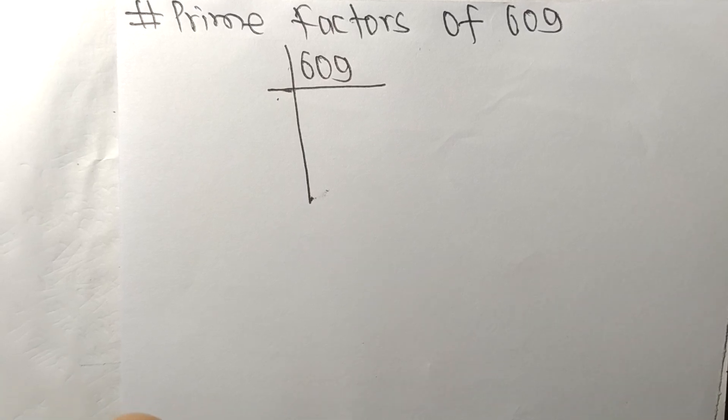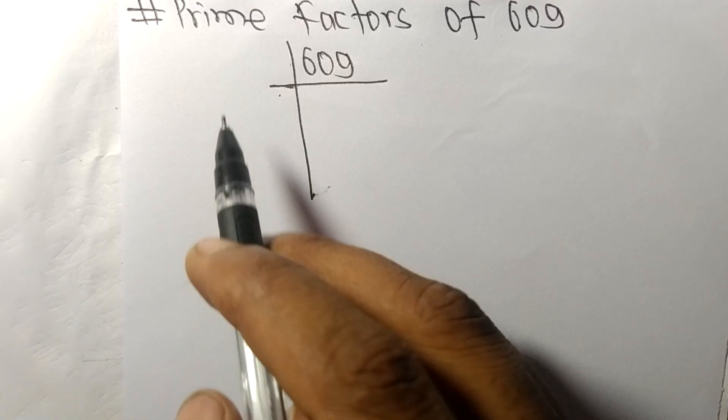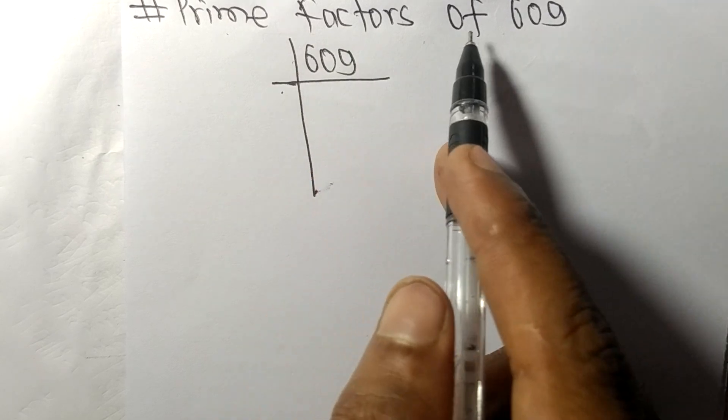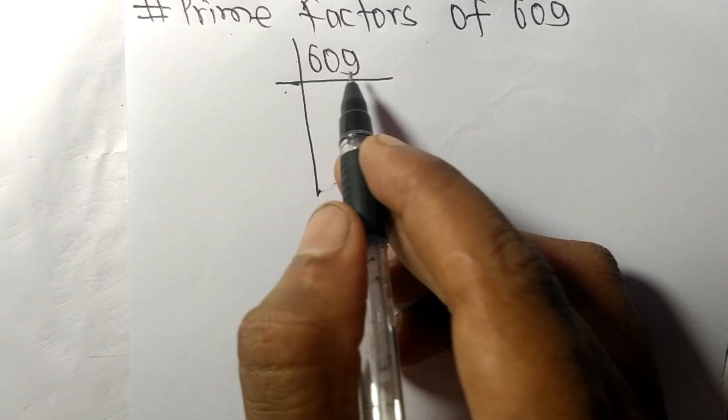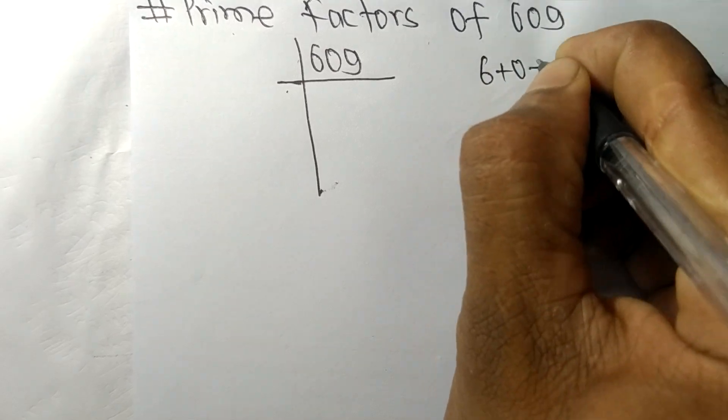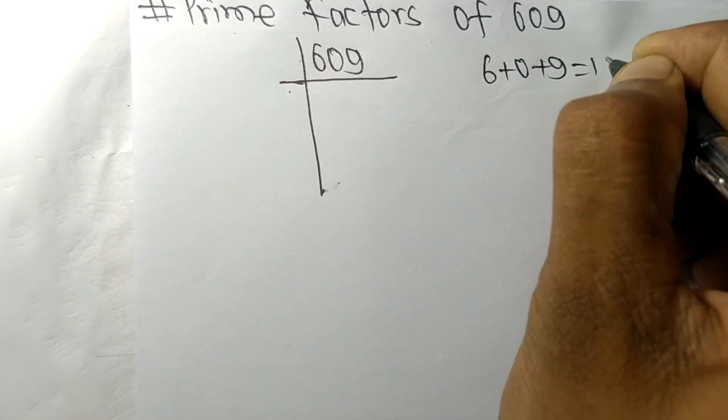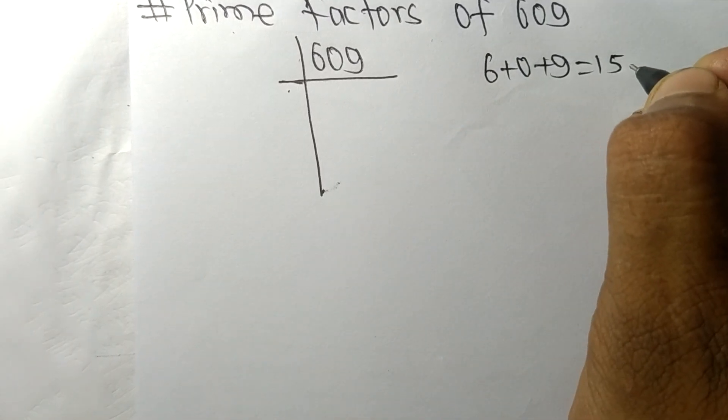So today in this video we shall learn to find the prime factors of 609. When we add all these numbers, that is 6 plus 0 plus 9, then we get 15, and 15 is exactly divisible by 3.